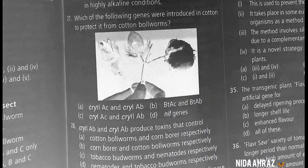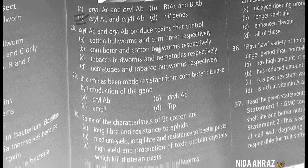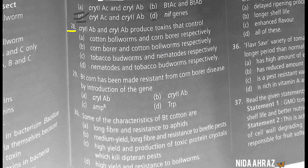Which of the following genes were introduced in cotton to protect it from cotton bollworms? Options include cry2ac, cry1ab, btac, and btab. cry1ac and cry2ab are nip genes, so the correct choice is option C: cry1ac and cry2ab.